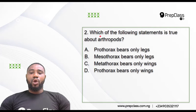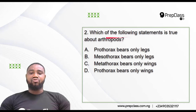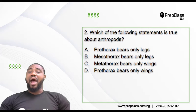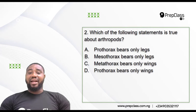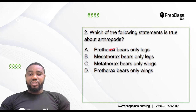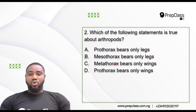Question two: which of the following statements is true about arthropods? Now I believe you know arthropods — they are segmented living organisms that are invertebrates. Examples include cockroach, insects like butterfly, arachnids like spiders, scorpions, millipedes, and centipedes that belong to the myriapods. The question asks: is it that the prothorax bears only legs? Is it that the mesothorax bears only legs? Is it that the mesothorax bears only wings? Or is it that the prothorax bears only wings?